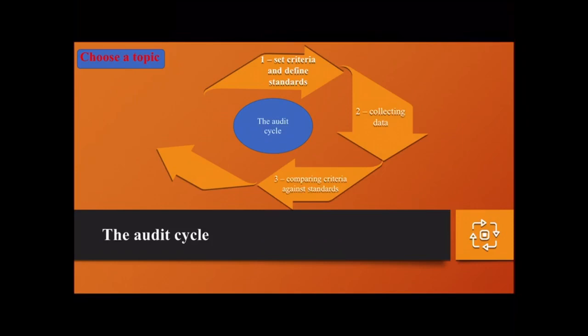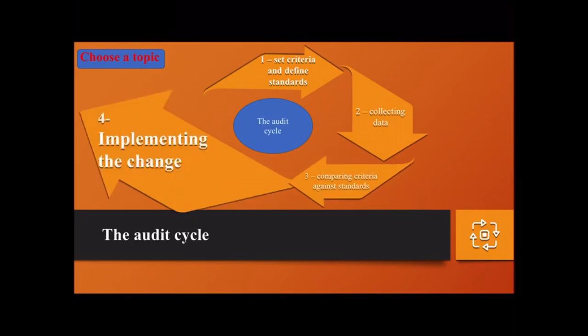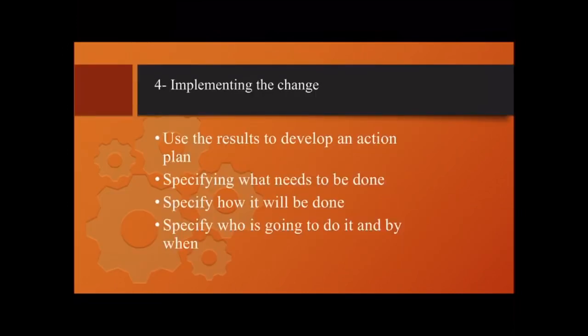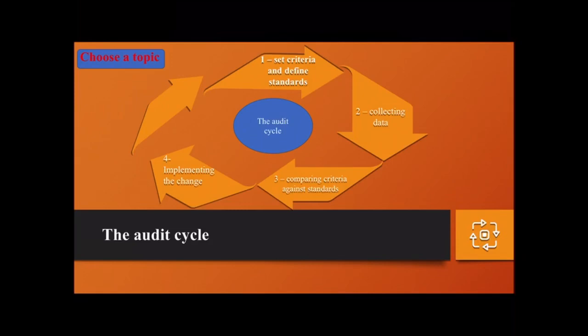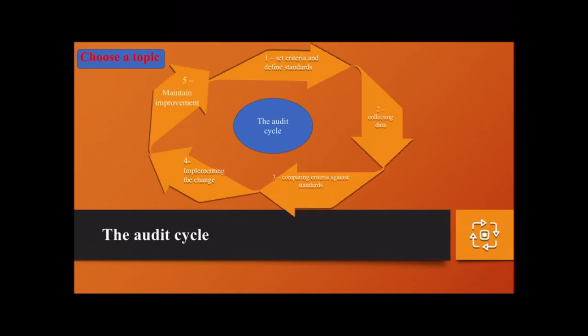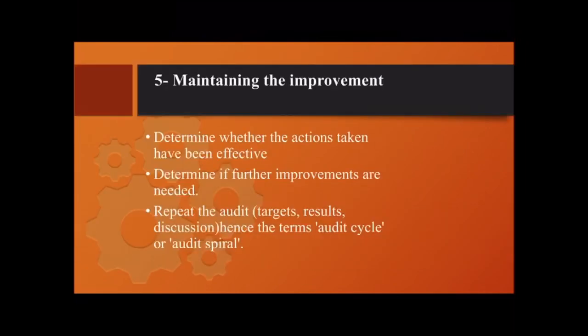We have now completed three out of five stages in the audit cycle. Next is implementing the change: use the results to develop an action plan, specifying what needs to be done, how it will be done, who is going to do it, and by when. The fifth and final part of the audit cycle is maintaining improvement: determine whether actions taken have been effective, determine if further improvements are needed, and repeat the audit. Hence the term audit cycle or audit spiral.